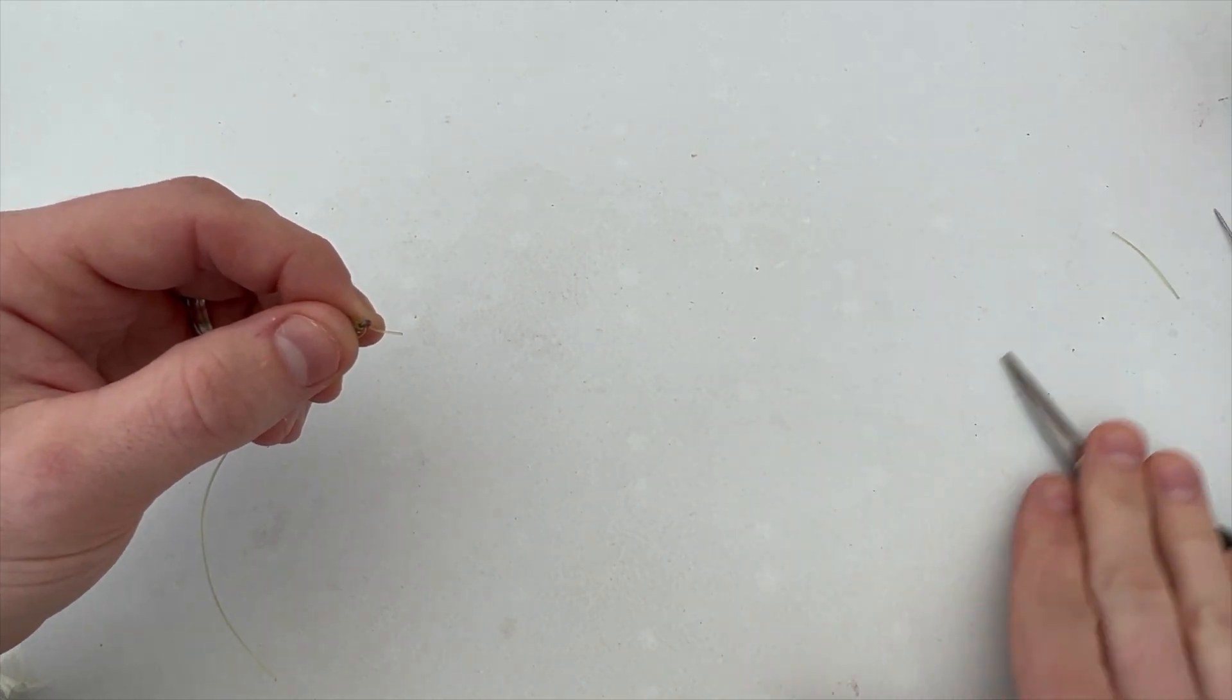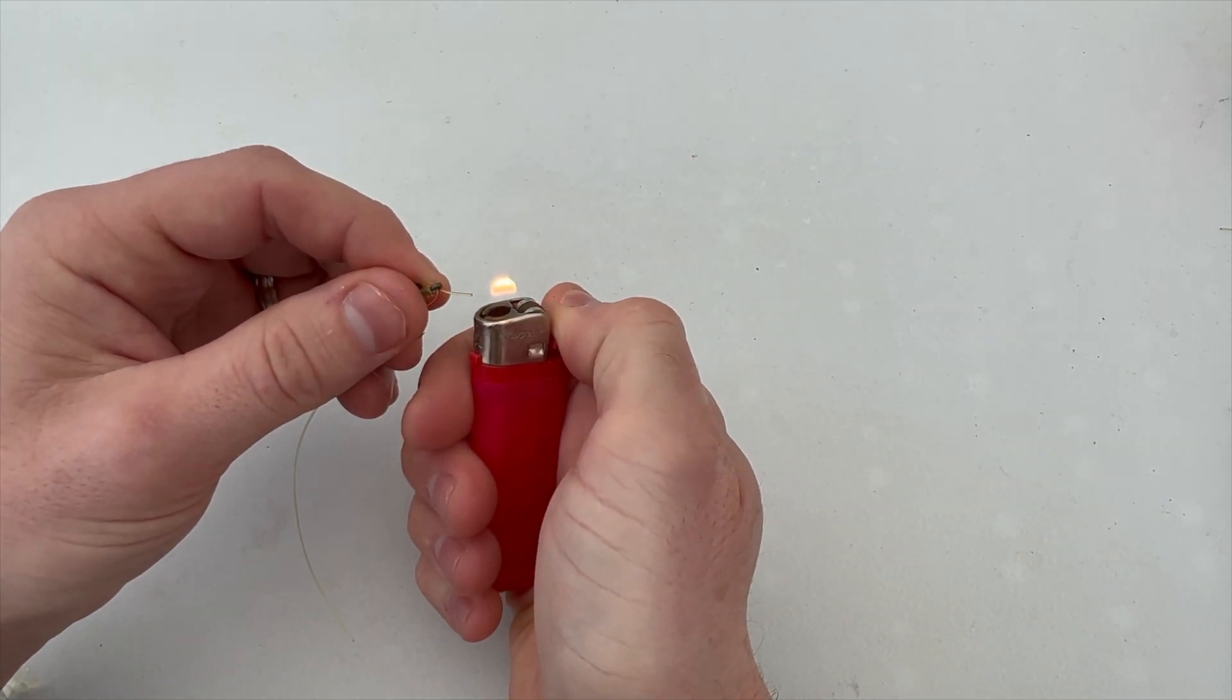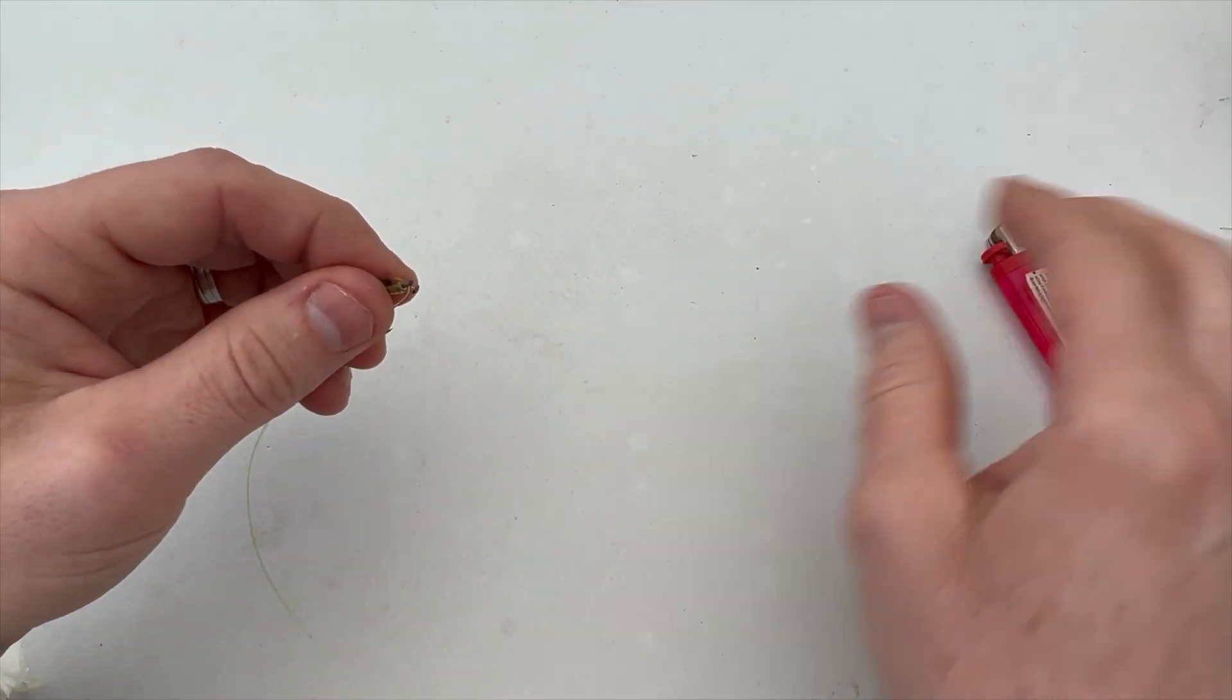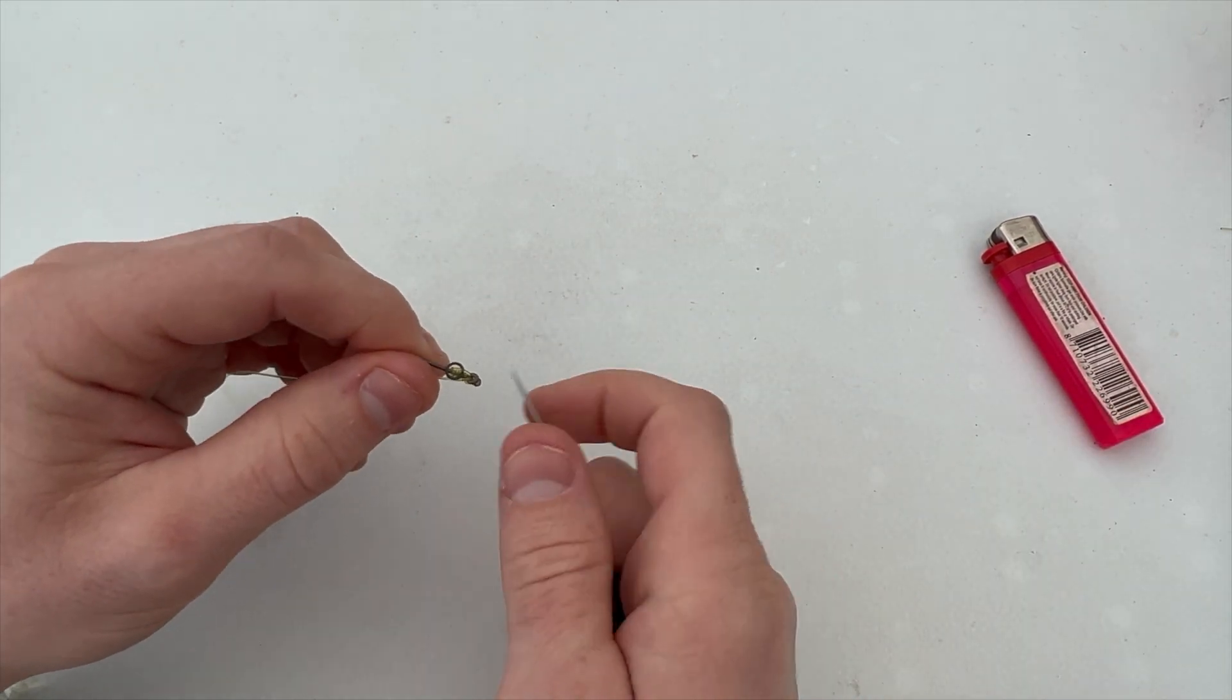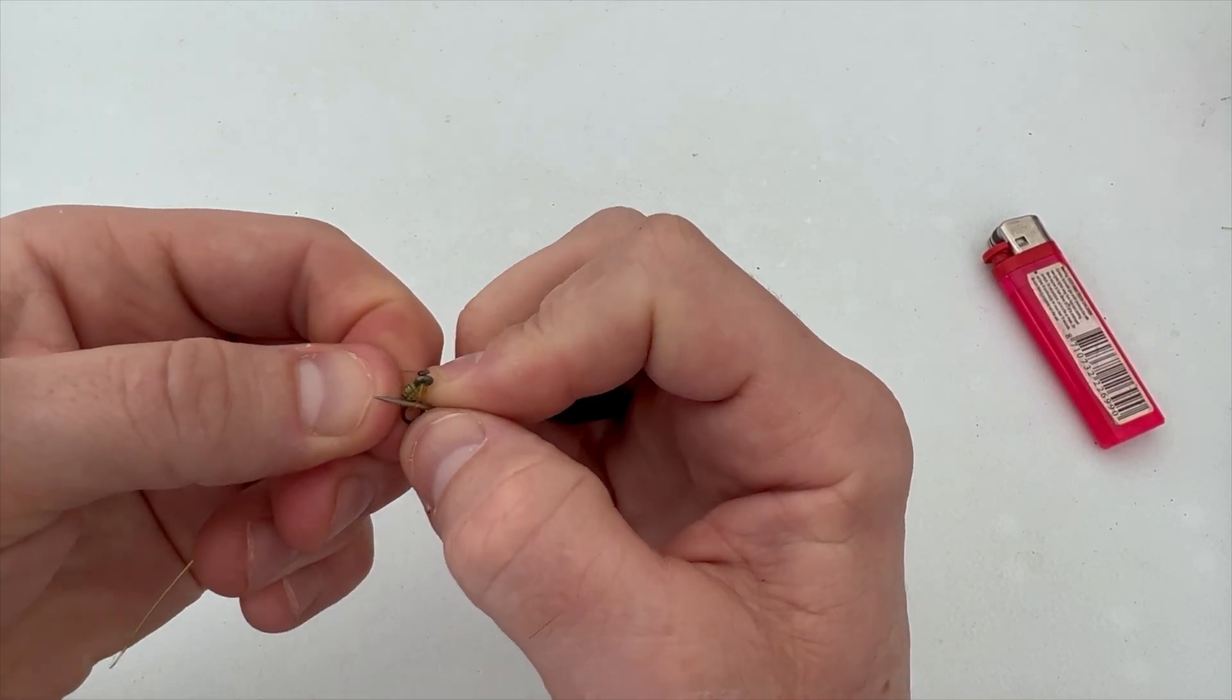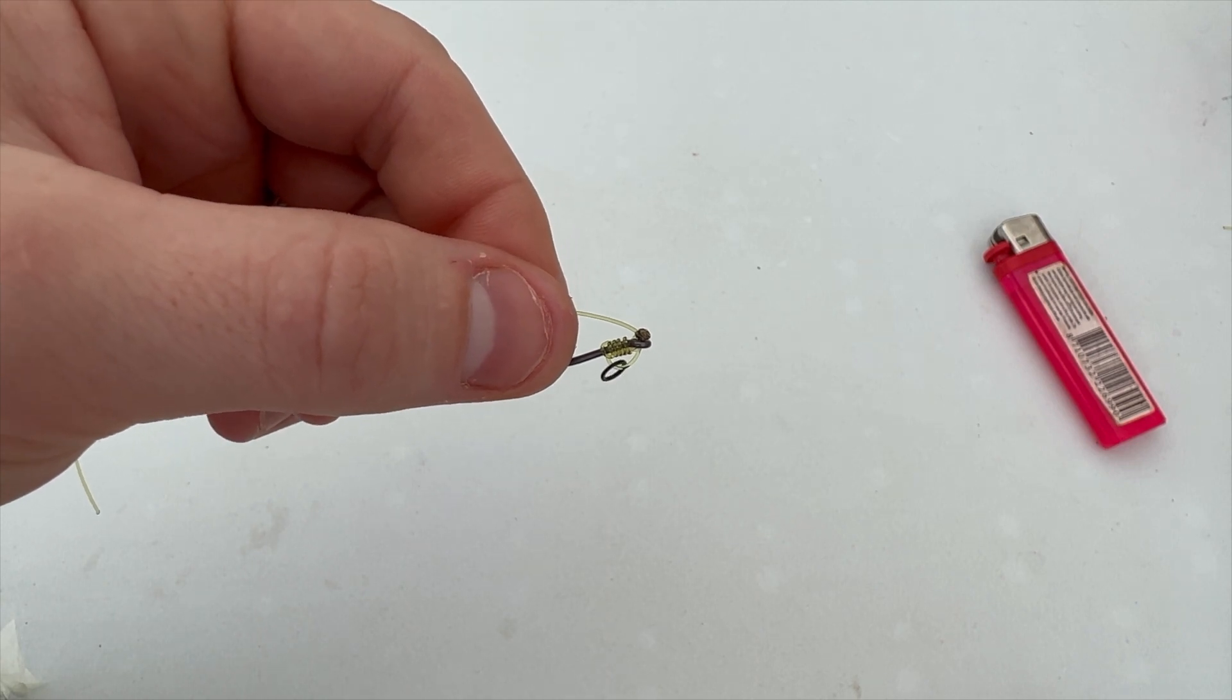You want to just blob down the end. That's nice and blobbed. We can then take a little tool and just open up this D section, turn it back, creating a lovely D section for our rig ring.